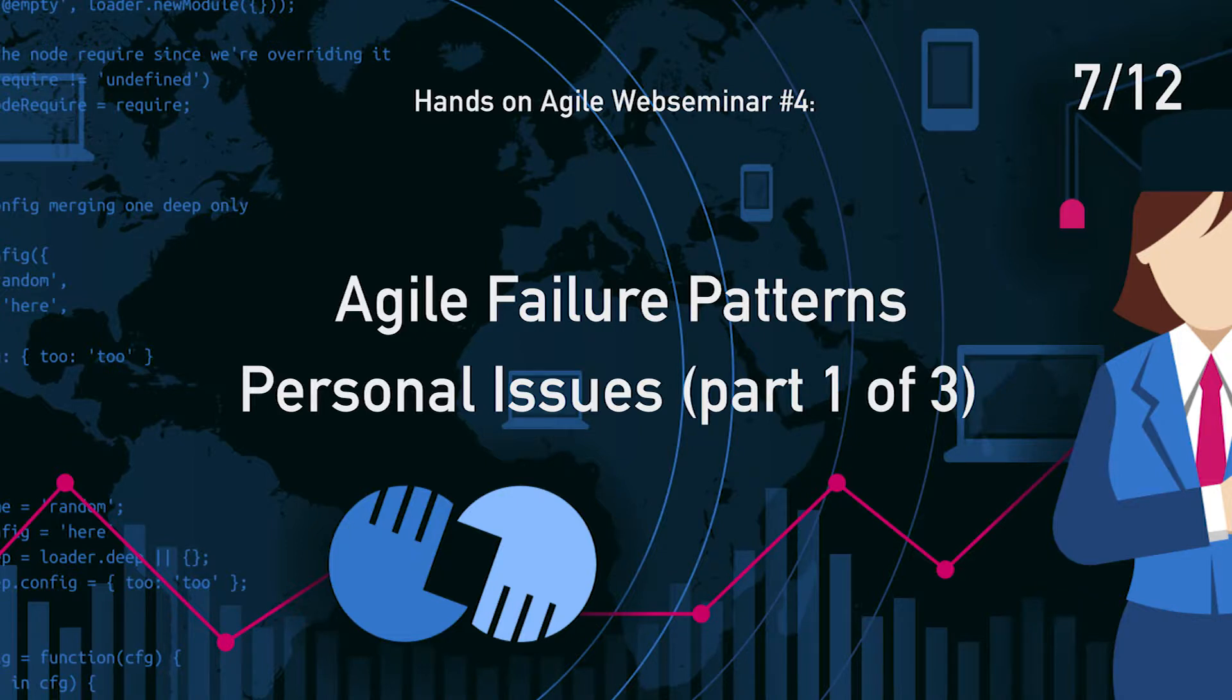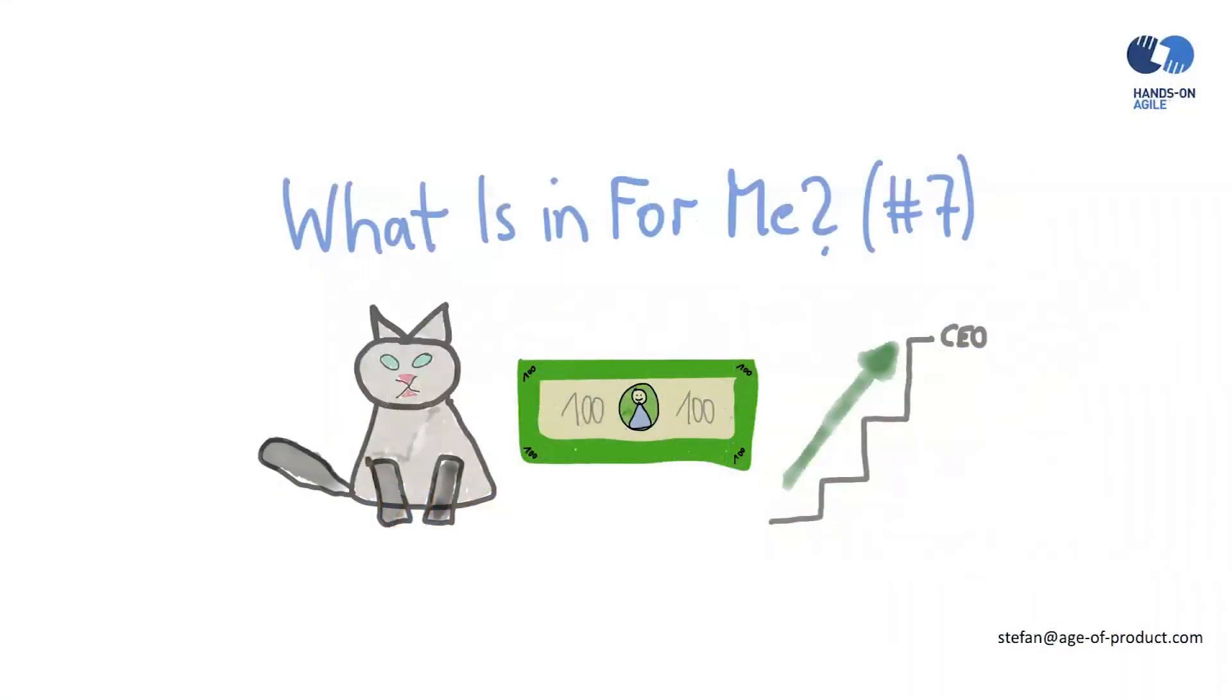Number seven, what is info me syndrome? Not everyone in your organization will love agile for a very simple reason. Accepting accountability, all the hype of teamwork and creating long-living teams, all this transparency is not appealing to everyone.